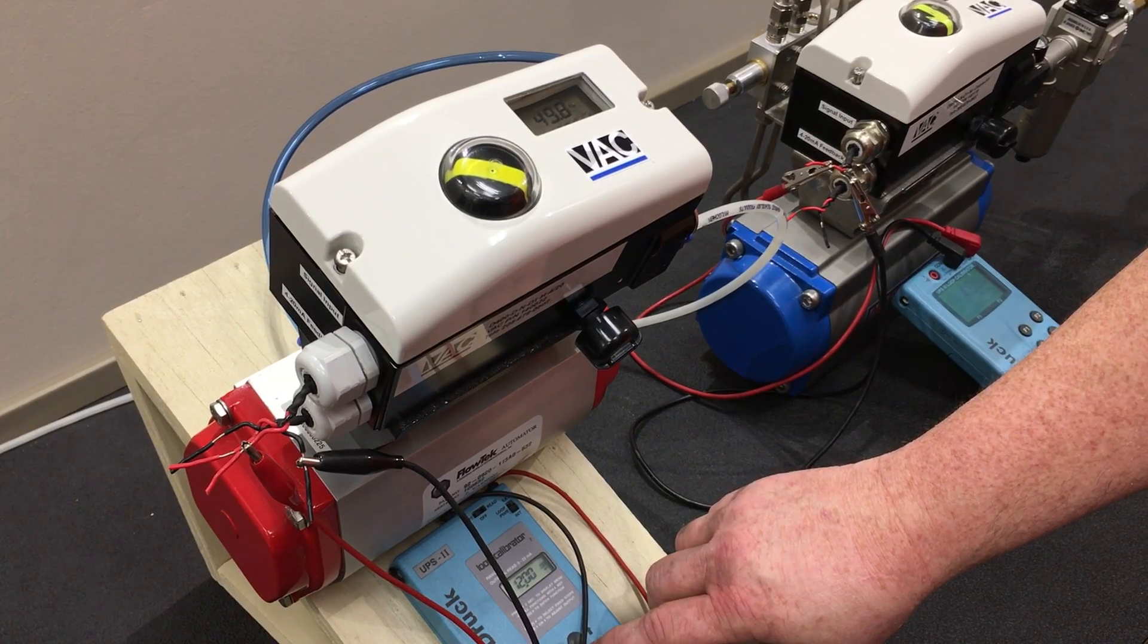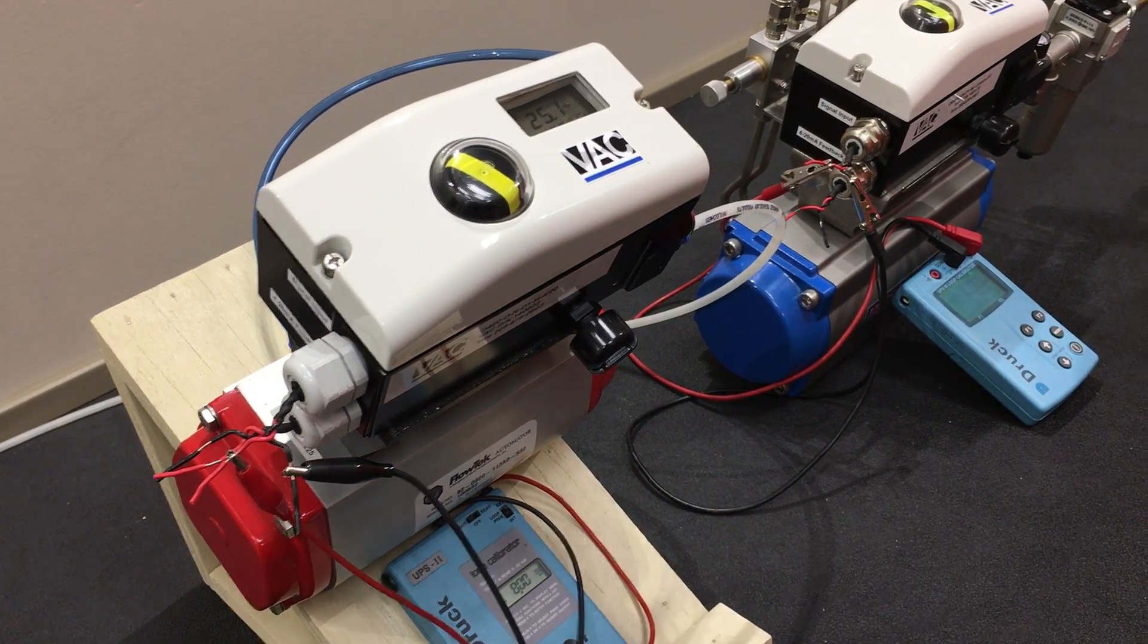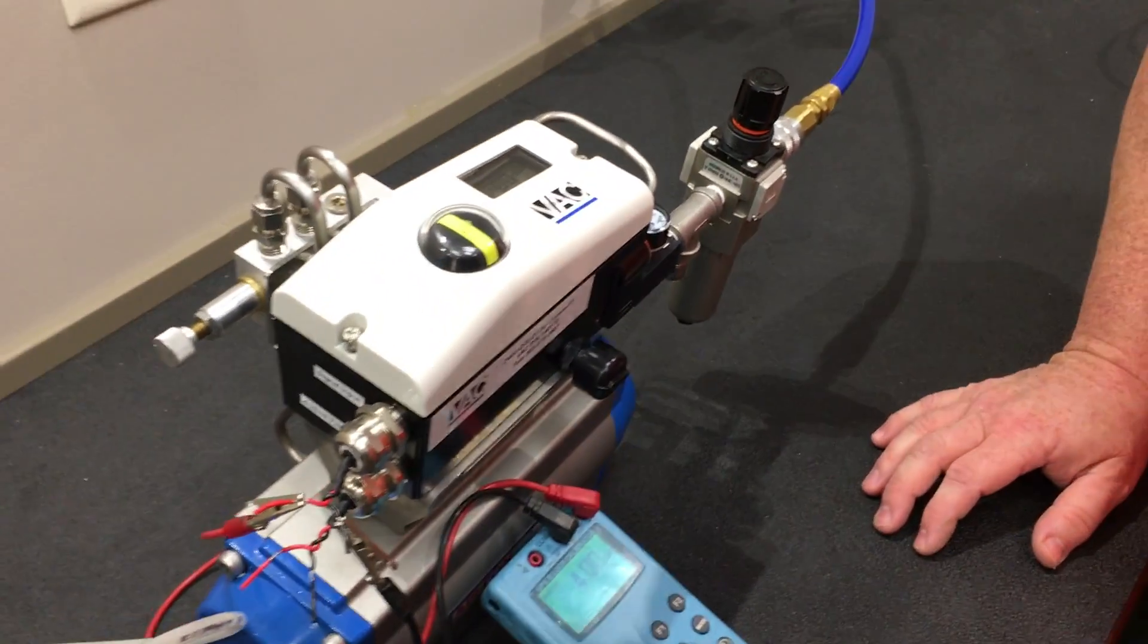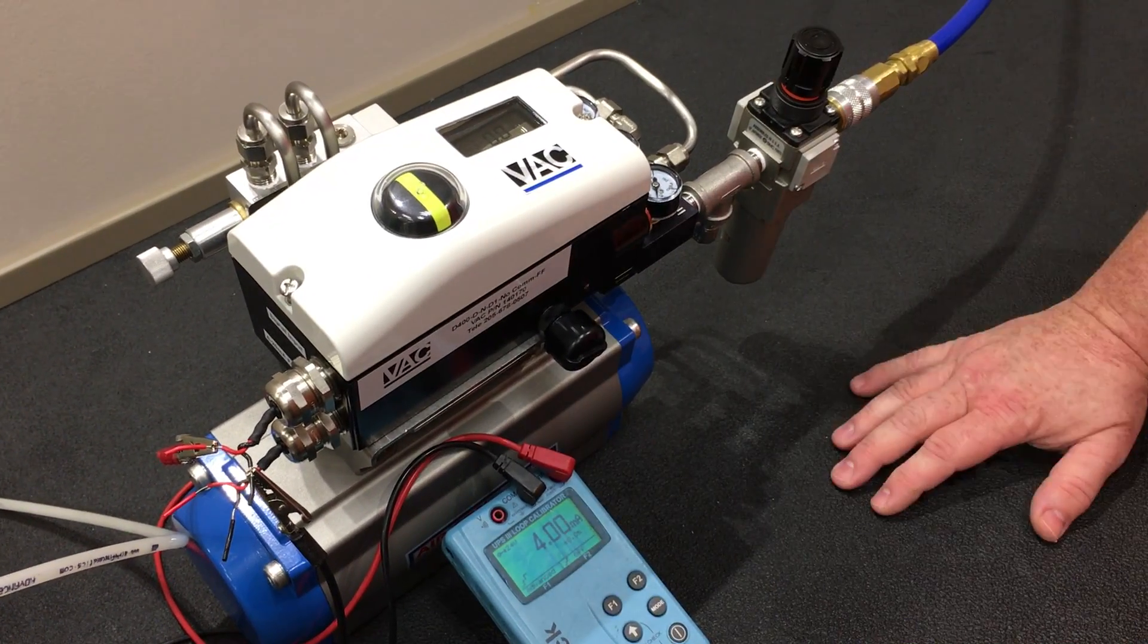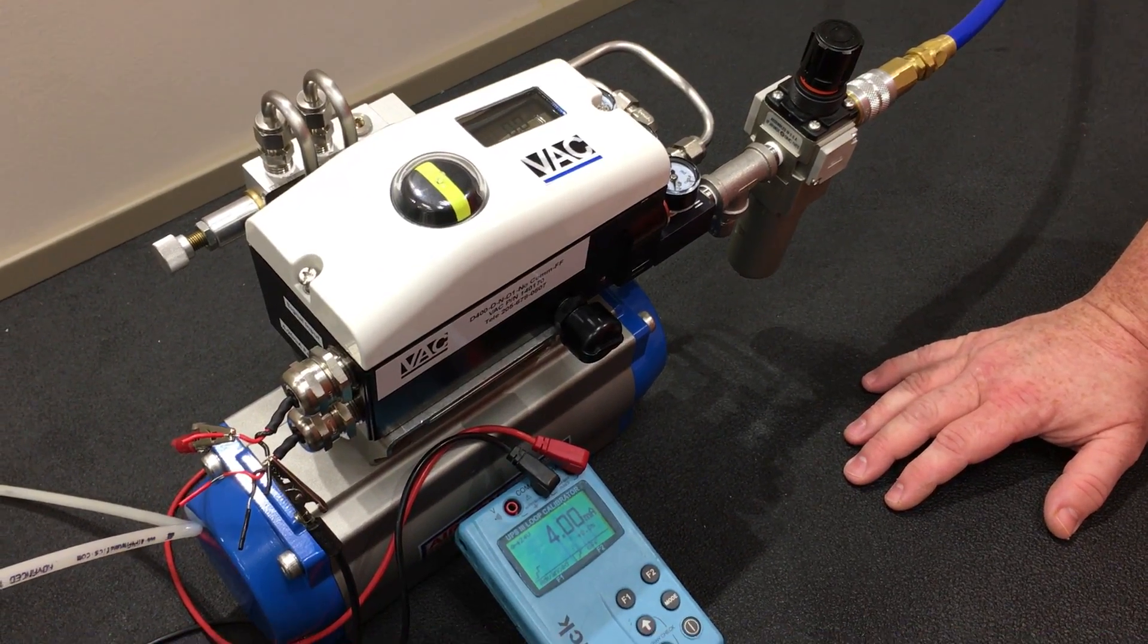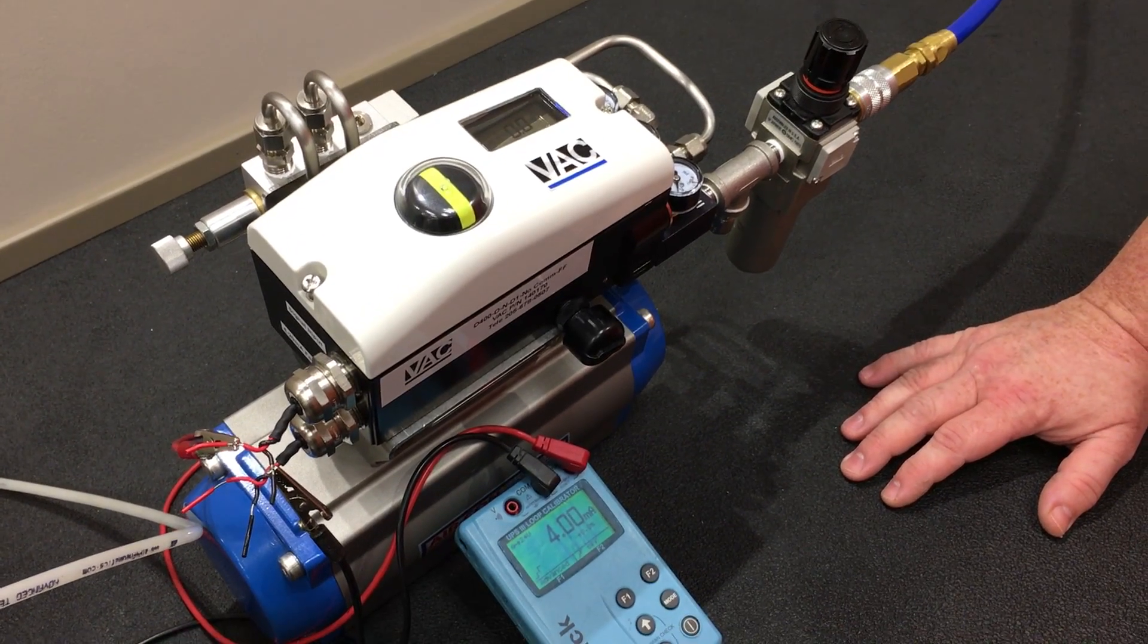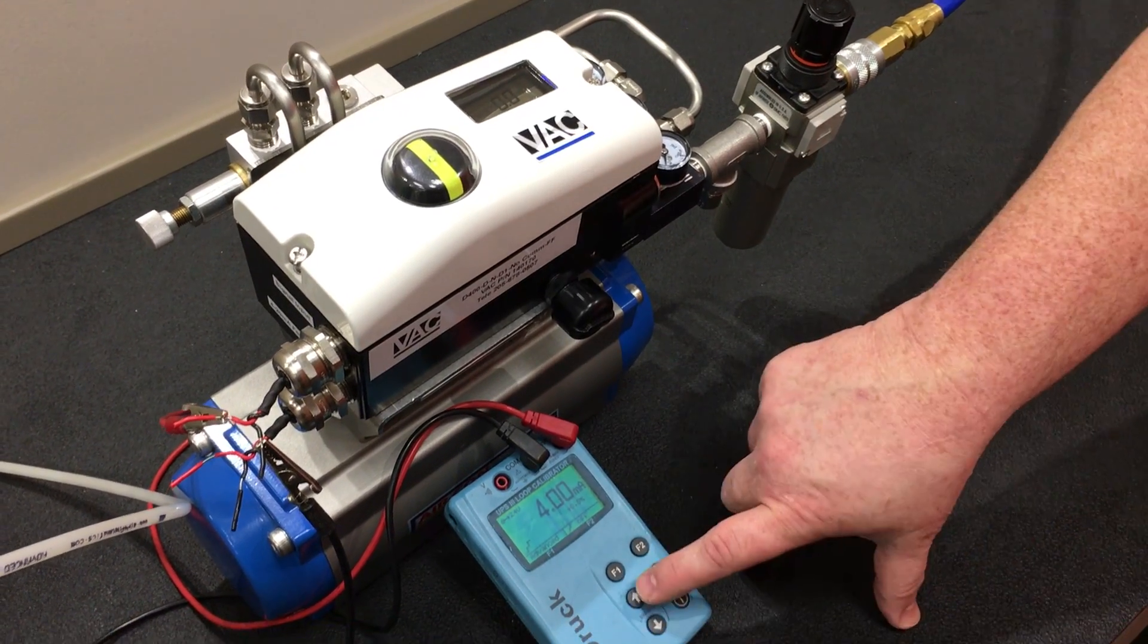Now we're going to look at a fail freeze positioner. With the fail freeze, it will freeze in place on loss of control signal, be that 4 to 20 milliamps.